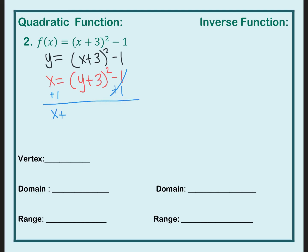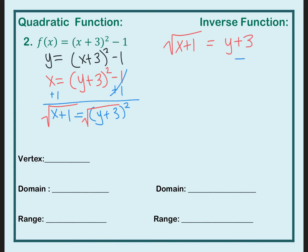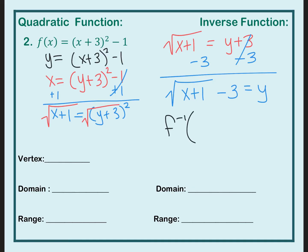So we have x plus 1 is equal to y plus 3 squared. The opposite of squaring is taking the square root of both sides, so I'm left with the square root of x plus 1 equals y plus 3. Then I subtract 3 from both sides and put the minus 3 after the radical. I replace y with f inverse notation, so the inverse of the function equals the square root of x plus 1, minus 3.